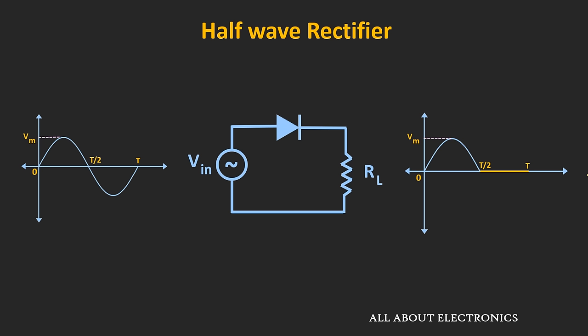For the analysis purpose, let's assume that this diode is an ideal diode. During the positive half cycle, the voltage which appears across the anode and cathode of the diode will be positive. It means that this diode will get forward biased, and we can simply replace this diode by a closed switch. So this entire voltage will appear across the load. During the positive half cycle, from 0 to T/2, the complete input wave will appear across the load.